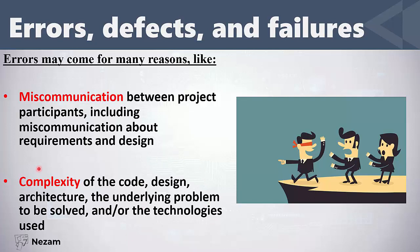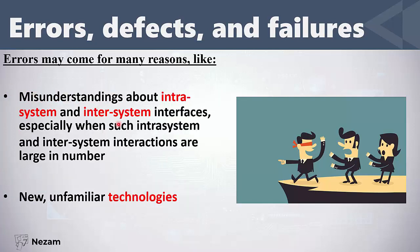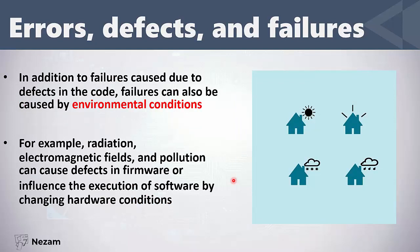Other reasons include complexity of the code, design, or architecture — on a large or complex project, the likelihood of errors increases. Also, misunderstanding about intra-system interfaces — between components — and inter-system interfaces — with other systems — will lead to more errors. Finally, working with new unfamiliar technologies also increases errors. These are all internal factors.